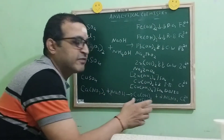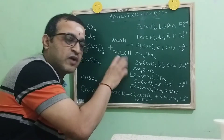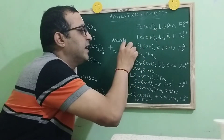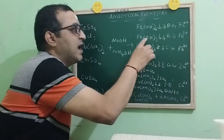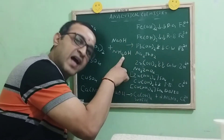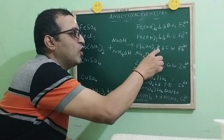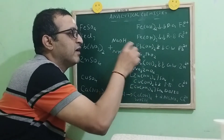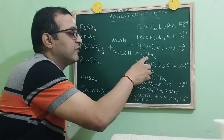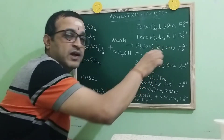All these precipitates, we have to check the solubility with respect to NaOH as well as ammonium hydroxide. When it comes to Fe(OH)2, it is insoluble in NaOH and NH4OH, and Fe(OH)3 is also insoluble in both NaOH and ammonium hydroxide. In case of Pb(OH)2, it is soluble in NaOH and the product you are going to get is sodium plumbite. In case of ammonium hydroxide, it is insoluble.